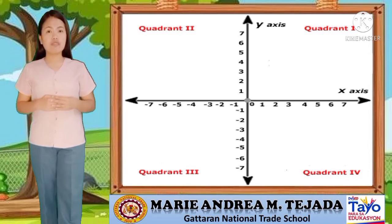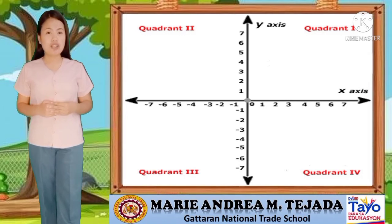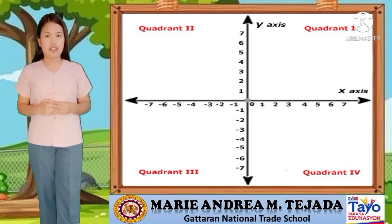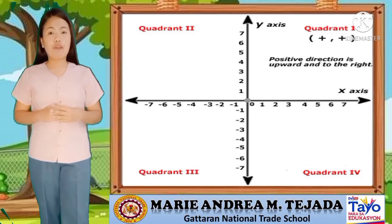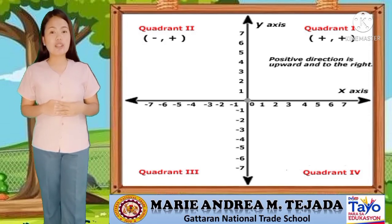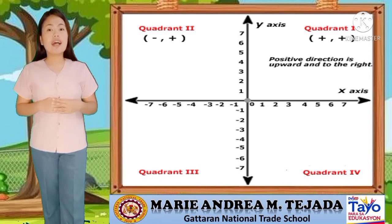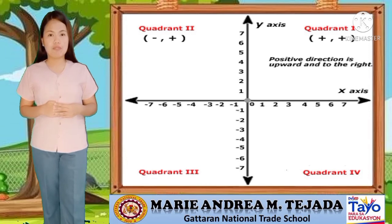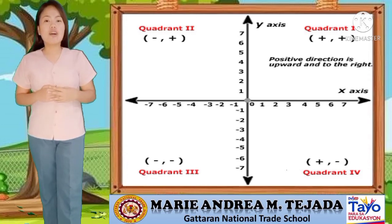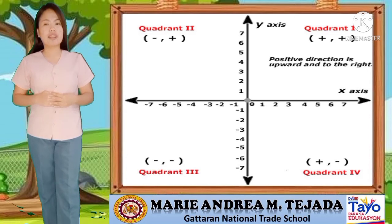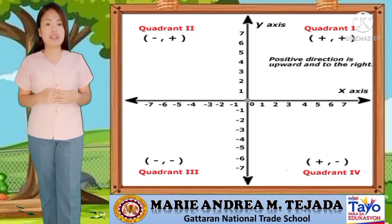We call X and Y an ordered pair because it is defined in the form (X, Y), not (Y, X). The Cartesian coordinate plane is divided into four regions called quadrants. The four regions, quadrant 1 to 4, are named in counterclockwise direction, starting from the upper right-hand region. In quadrant 1, both coordinates are positive. In quadrant 2, the X coordinate is negative while the Y coordinate is positive. In quadrant 3, both coordinates are negative. In quadrant 4, the X coordinate is positive while the Y coordinate is negative.